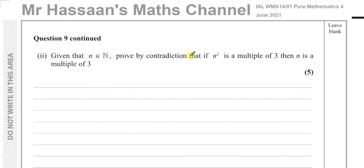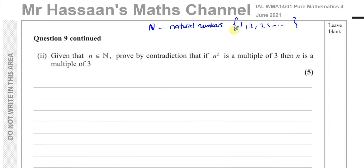This question tells us that n is an element of ℕ — the natural numbers. The natural numbers are the numbers you count with: only the positive whole numbers starting from one, i.e. the positive integers. If they said ℝ that means the real numbers; if they said ℤ that means integers, positive and negative including zero. You need to know these symbols, which you can find at the back of the International A Level book.